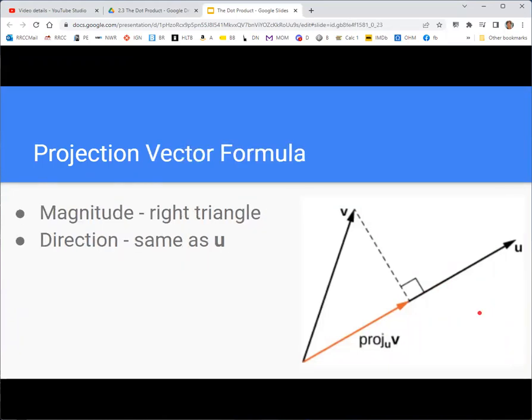So the magnitude of this projection is the same as the magnitude of that component of v. And the direction is the same direction as the vector u. And we can use that to derive what the projection is.